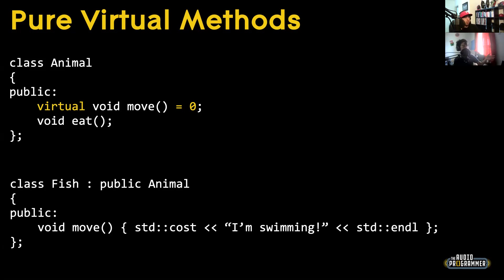Alex asks: if I inherited from Fish instead of Animal, would the move method still be required? That gets into multiple inheritance. I'd venture to say no, because Fish already has a move implementation, so anything deriving from Fish would not need to re-implement it. We can actually test that in just a moment to find out.